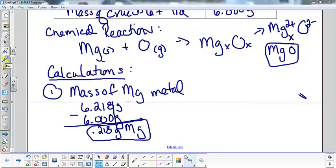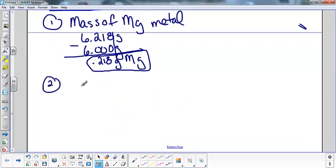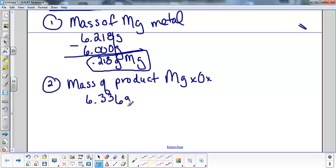The next calculation that we have to do is the mass of the product. So what was our mass of whatever product that we got in lab? I'm going to take the mass of the crucible, lid, and product, and subtract the mass of the crucible and the lid.